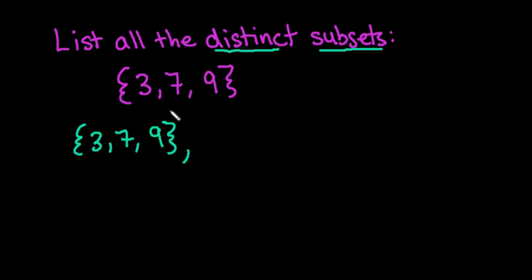You would then move down to one less than what you originally started with. So we started with three elements, so now we list all the combinations we can of two elements. I would start with the 3 and the 7. I don't put 7 and 3 because it contains the same elements. That's why we are looking for distinct—they have to be different.